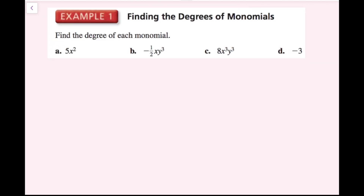For this example, we're going to find the degree of each monomial. For the first example, 5 times x squared — the coefficient doesn't matter here. We're just worried about the x, which is taken to the second power. So this is degree 2.